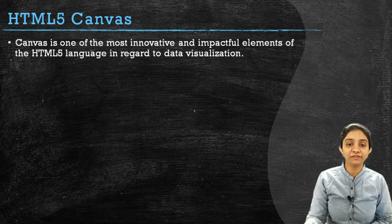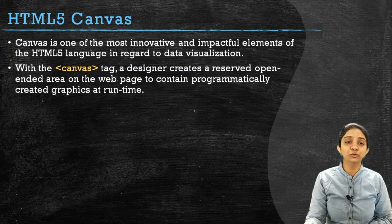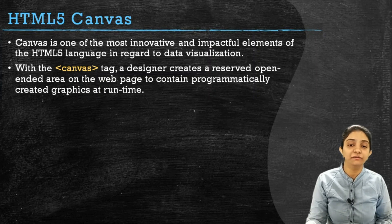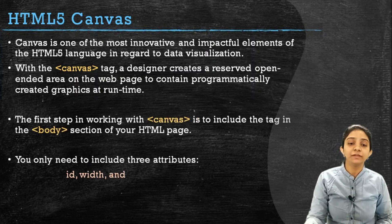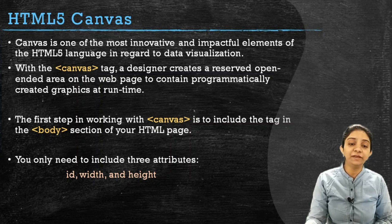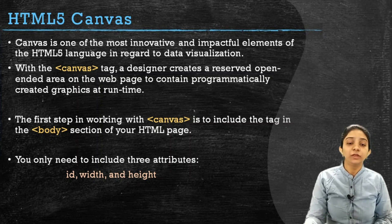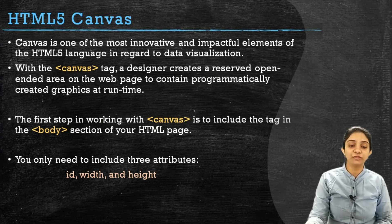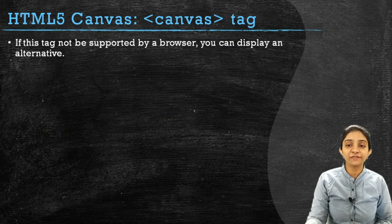HTML5 canvas is the most innovative and impactful element in the HTML5 language with regards to data visualization. We have to add a canvas tag. For the canvas tag, a designer can create a reserved open-ended area on a web page to contain programmatically created graphics at runtime. The first step in working with the canvas tag is to include the tag itself in the body section of the HTML page. You only need to include three attributes along with the canvas tag: id, width, and height of the canvas area.